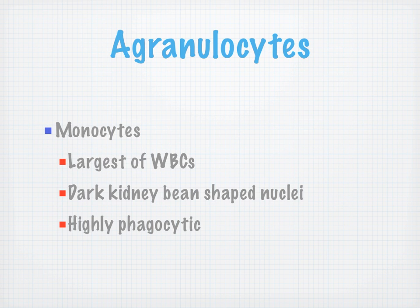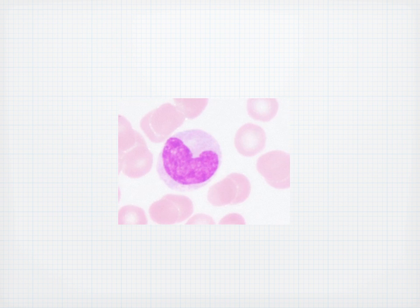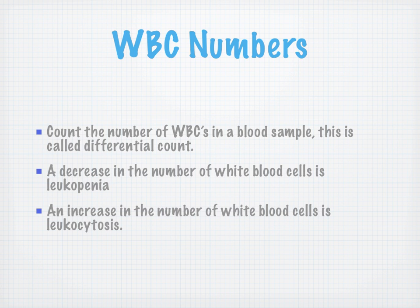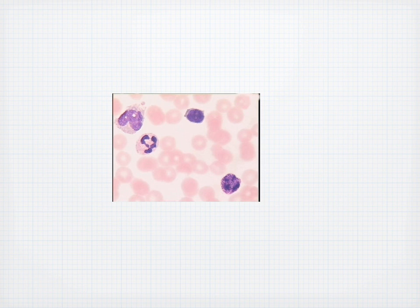Monocytes are the largest of the white blood cells, with a dark kidney-bean-shaped nucleus, and they're highly phagocytic. White blood cell numbers: counting white blood cells in a blood sample is called the differential. A decrease in the number of white cells is termed leukopenia, and an increase is termed leukocytosis.